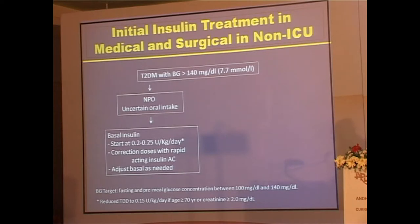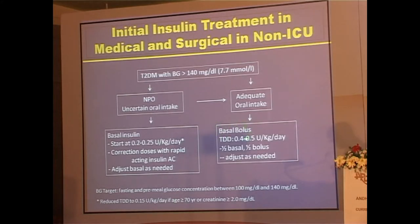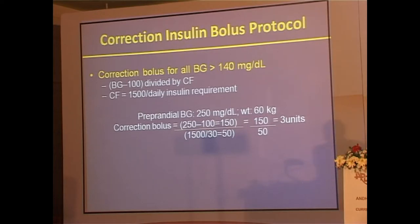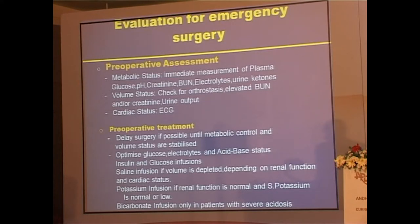This is the ACE/ADA protocol — full text is freely downloadable on the ACE website. For a nil-by-mouth patient, a small dose of basal insulin manages it. With adequate oral intake, start basal-bolus with a total daily dose of 0.4–0.8 units/kg, split half basal and half bolus, adjusted as needed. For correction bolus, for any blood glucose above 140, the correction factor is 1500 divided by the daily insulin requirement — for example, for 60 kg with a 50-unit daily requirement, the correction bolus is 3 units. Insulin rate protocols require education of resident doctors and nursing staff.